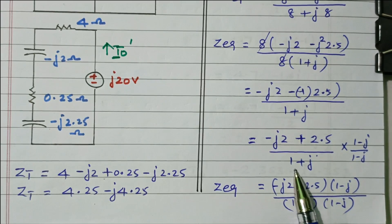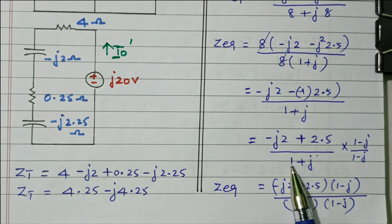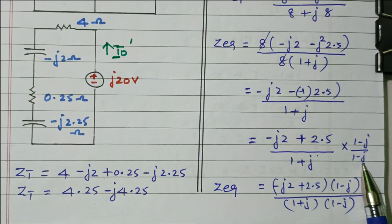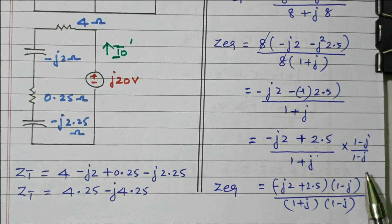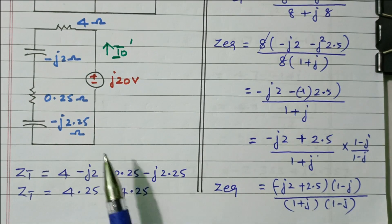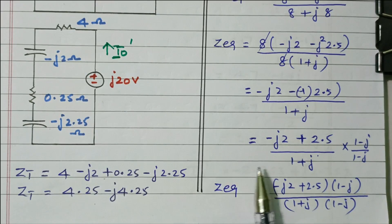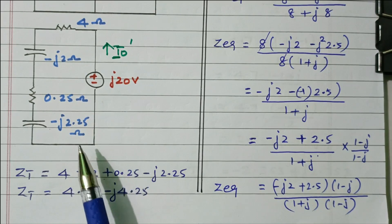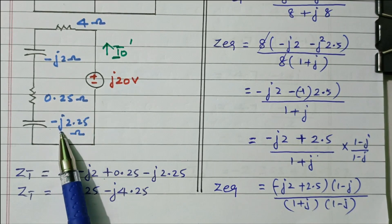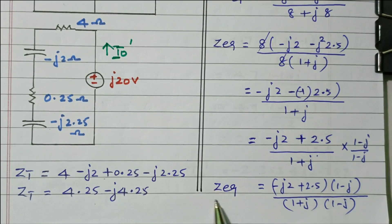The complex conjugate of (1 + j) is (1 − j). Multiplying numerator and denominator by (1 − j), and using the identity (1 + j)(1 − j) = 1 − j² = 2, we simplify to get Z equivalent equal to 0.25 minus j2.25.